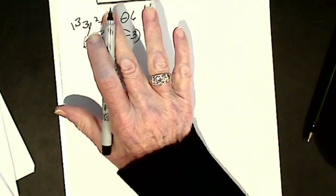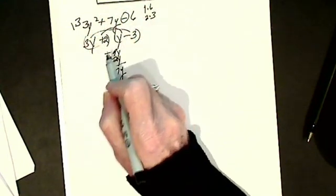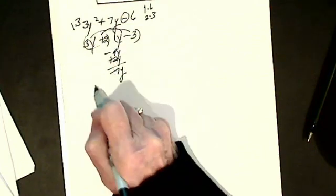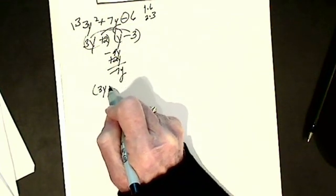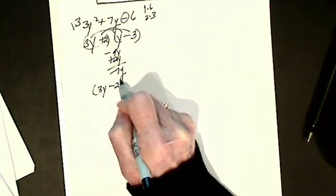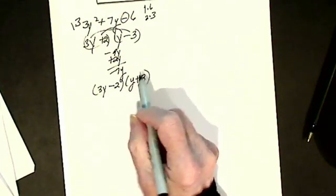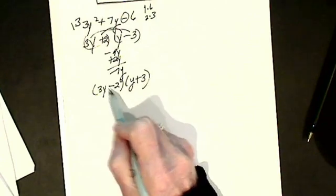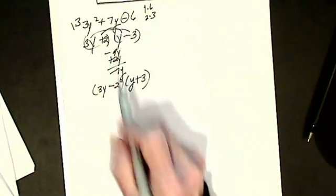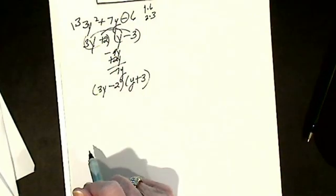If I'm off by a sign, all I do is go back and change the signs. So my answer is going to be 3y minus 2 and y plus 3. And then I'll check to make sure. Plus 9 minus 2 gives me plus 7. I FOIL. I get minus 6.